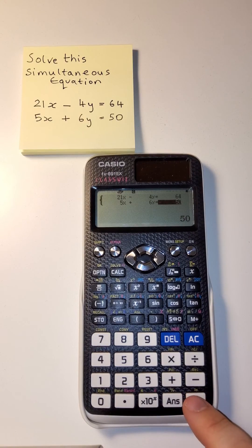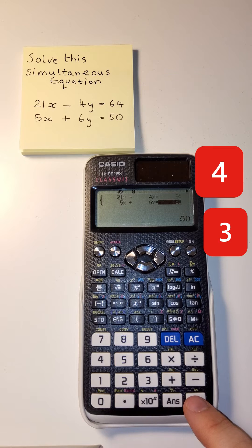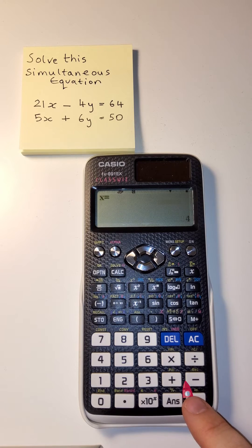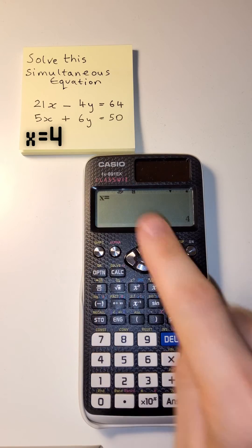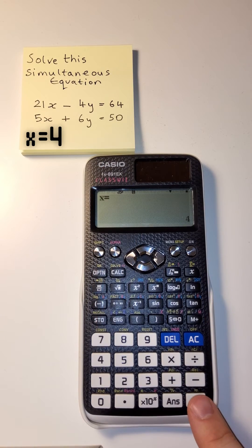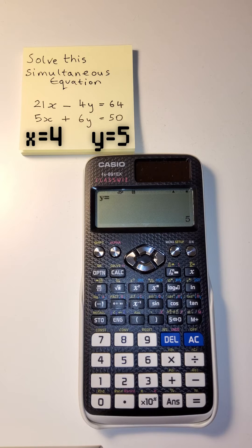What we have to do now is press equals. We should get both answers. We keep pressing equals till we get them all. So the first one is X. The value of X is 4. Just write that down. And then the value of Y is 5. This is correct.